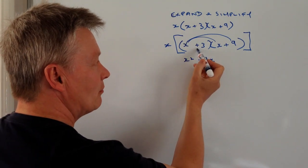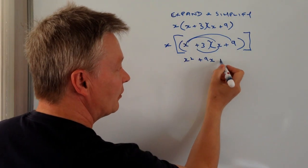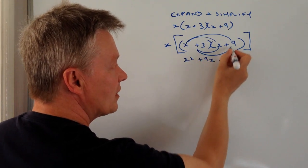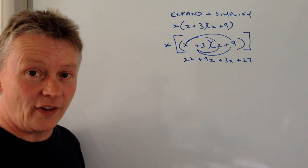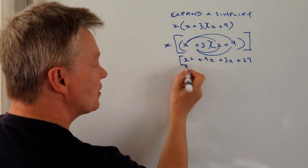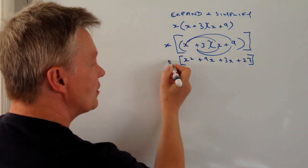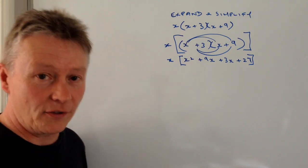So the final bit is I'm going to multiply through by this. I've got plus 3x and I've got plus 3 times plus 9 is plus 27. And all of that is inside these square brackets, which is then multiplied by x on the outside.